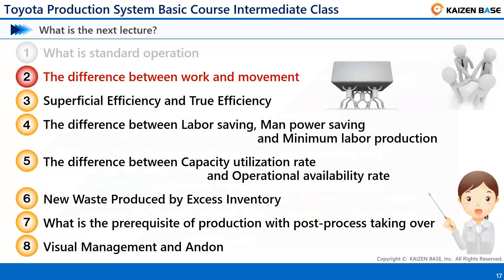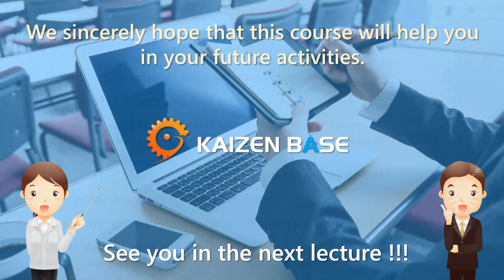This concludes the Toyota Production System Basic Course Intermediate Class, Chapter 1: What is Standard Operation? Continue to learn Chapter 2: The Difference Between Work and Movement. We sincerely hope that this course will help you in your future activities. See you in the next lecture.